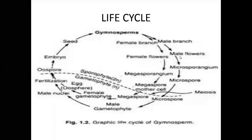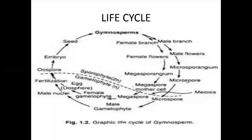Male cones are male flowers containing microsporangia. From the microsporangia, microspores are developed by meiosis division. Microspore mother cells participate in meiosis division and develop into microspores.